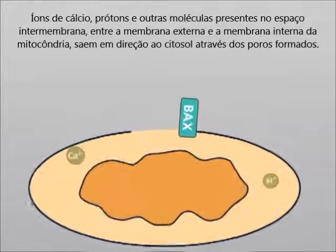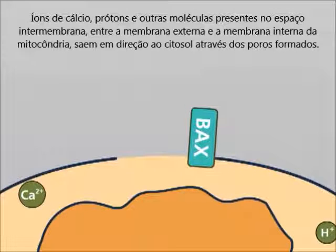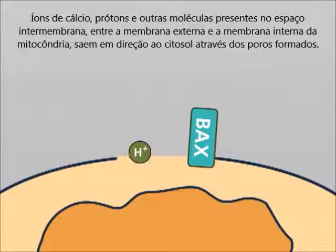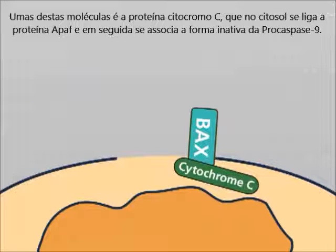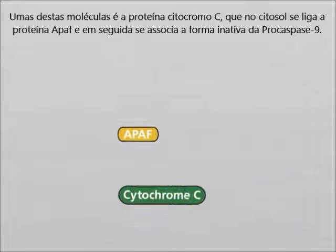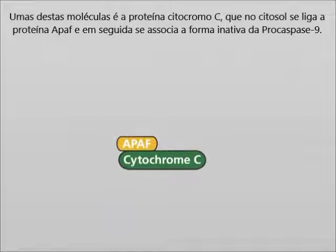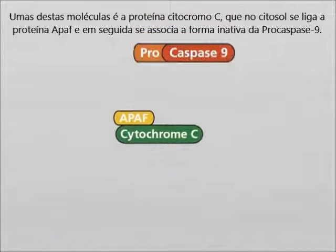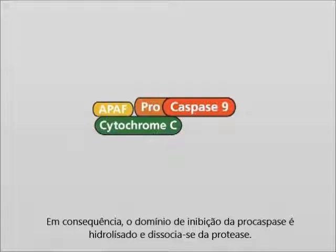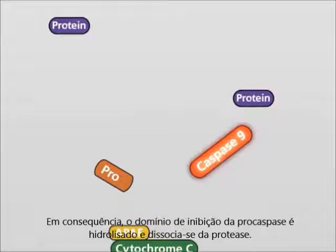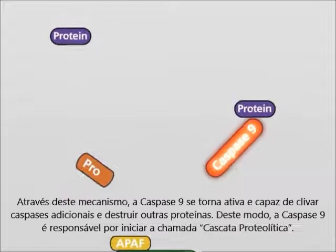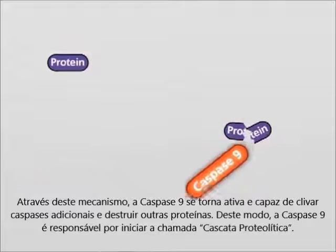BAX forms pores in the outer membrane of mitochondria. Calcium ions, protons, and other molecules located in the intermembrane region between the outer and inner membrane may leak into the cytosol. One of these molecules is the protein cytochrome C. In the cytosol, cytochrome C binds to APAF and may then associate with an inactive form of Procaspase 9. As a consequence, the inhibiting domain of the Procaspase is hydrolyzed and dissociates from the protease, and Caspase 9 becomes active.